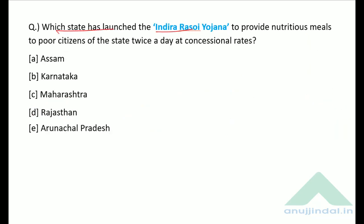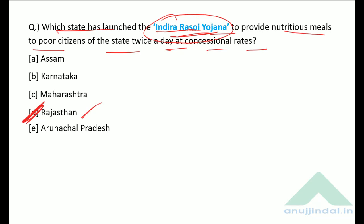Which state launched the Indira Rasoi Yojana to provide nutritious meals to poor citizens twice a day at concessional rates? The correct answer is option D — Rajasthan.